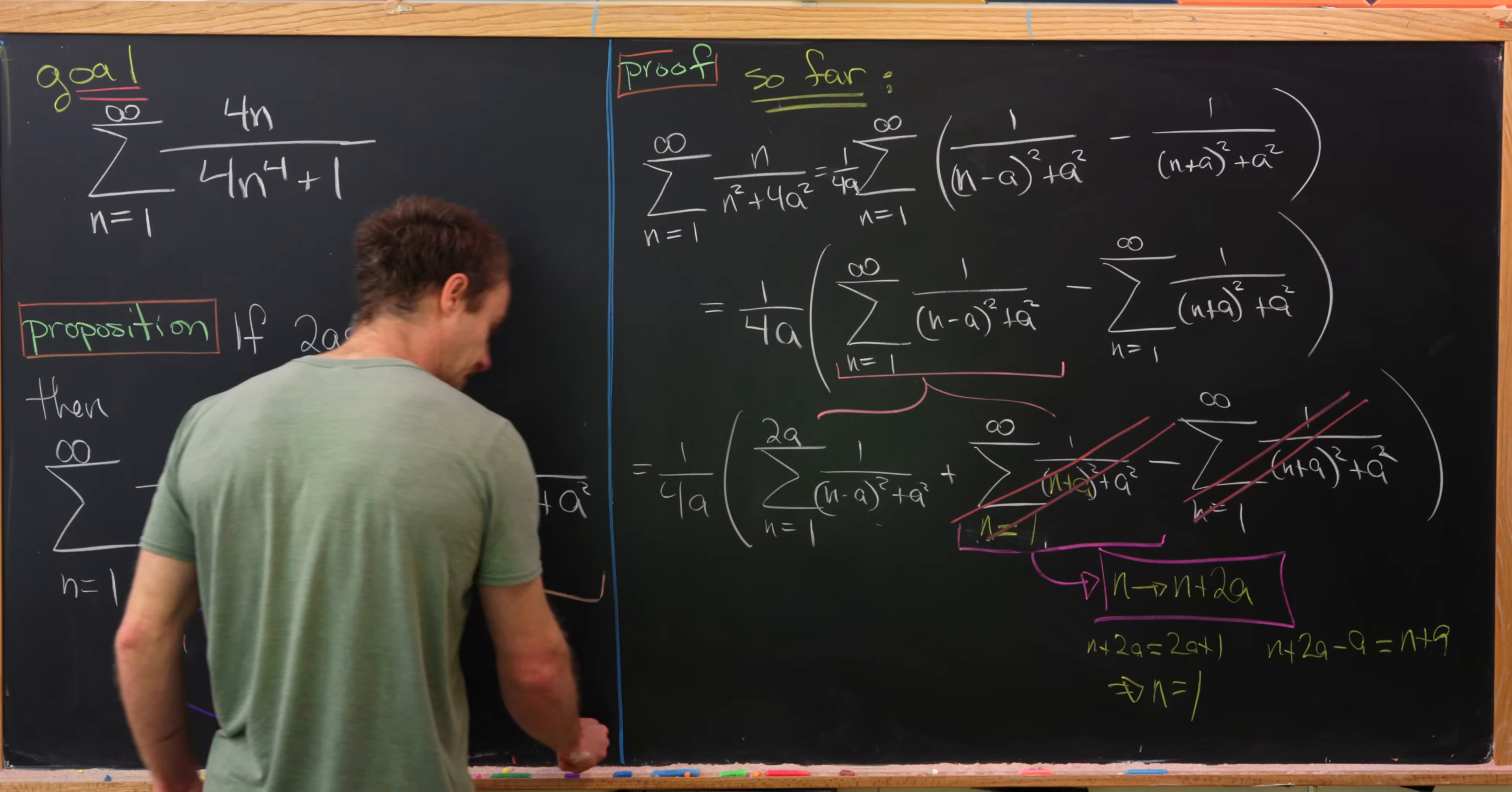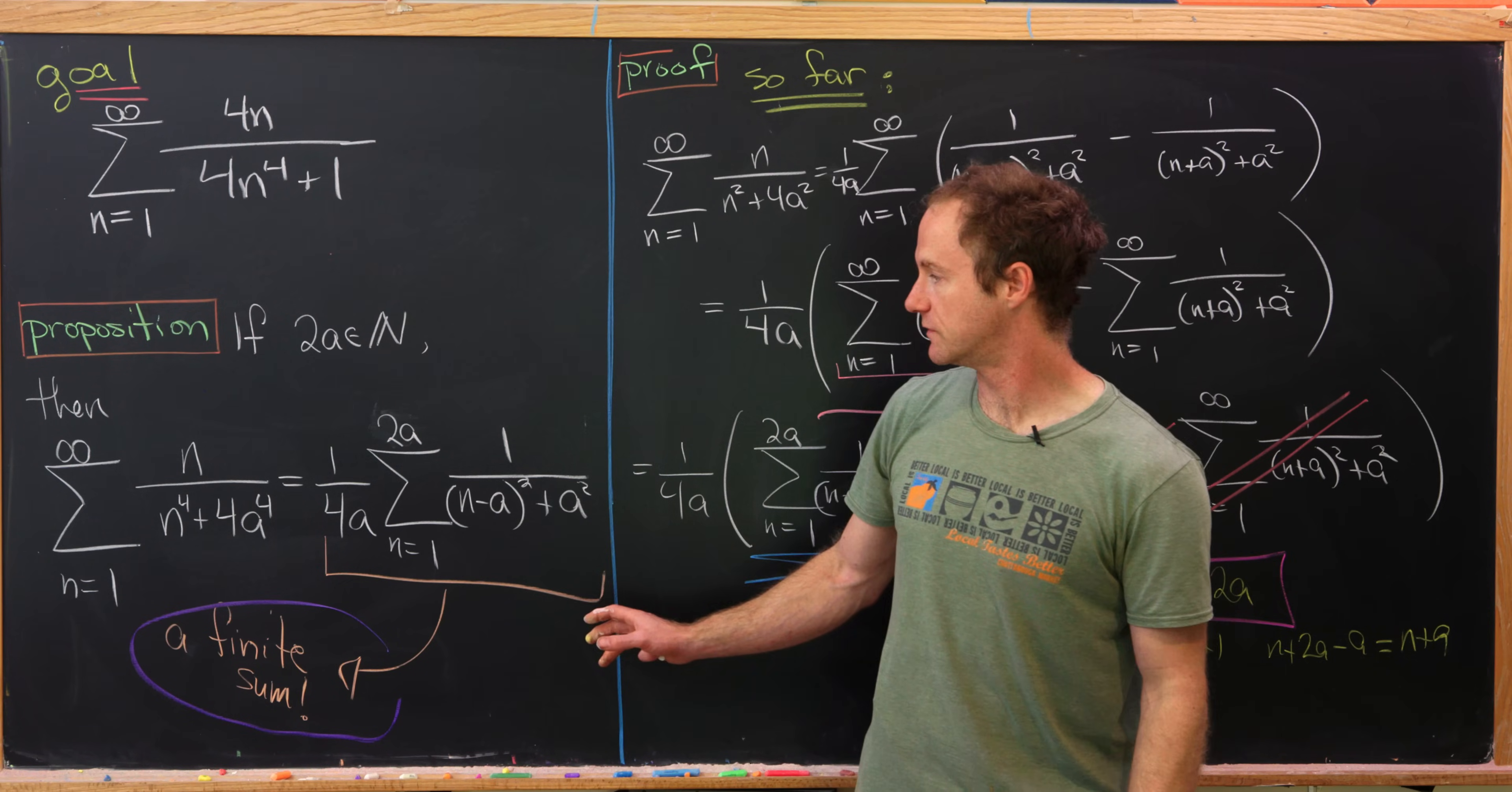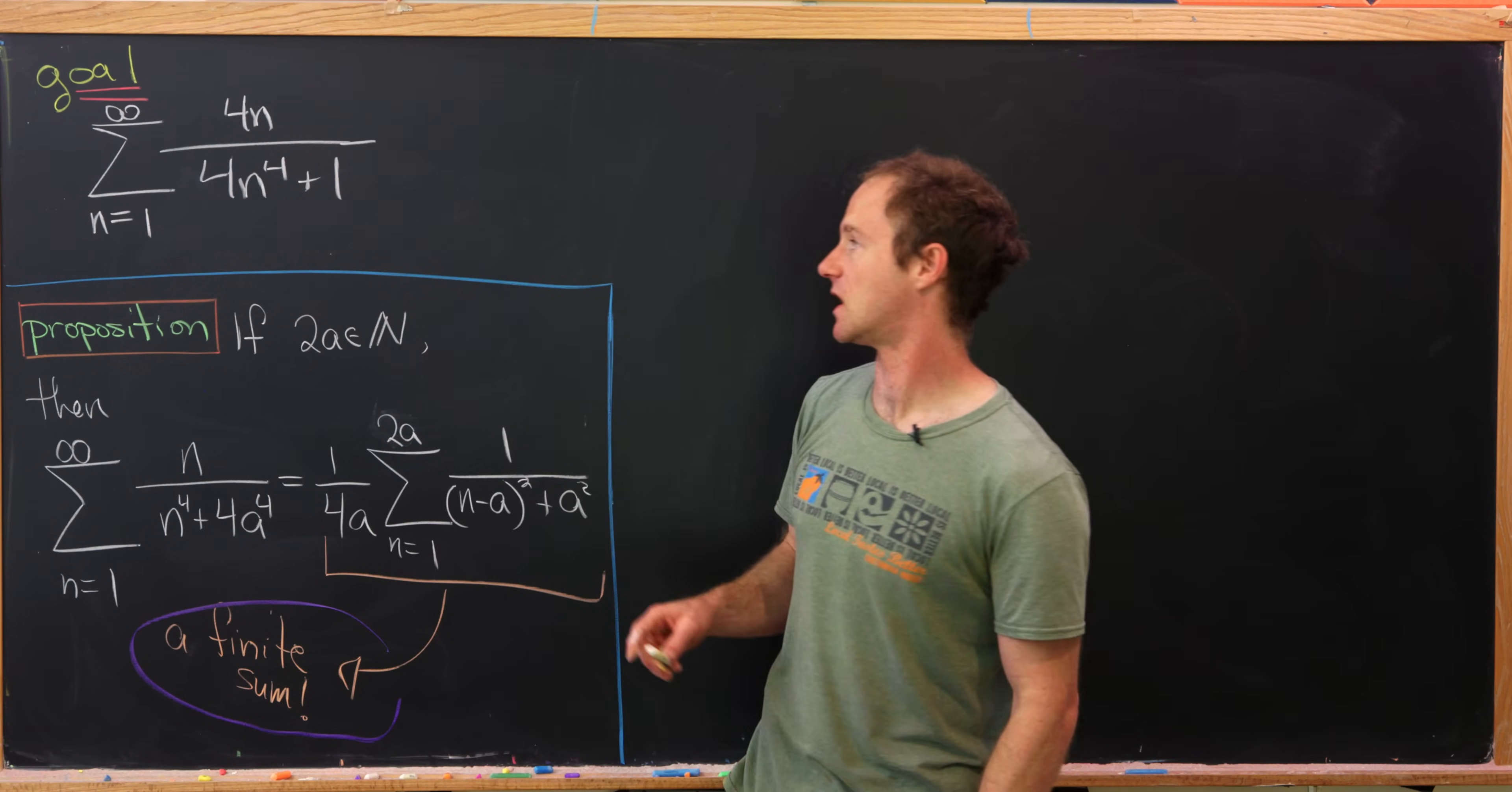And now we're left only with this right here, times the 1 over 4a. But that's exactly the statement of this proposition. So we've got this proposition proved. Now let's go ahead and apply it to our goal sum.